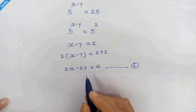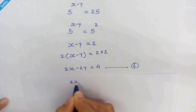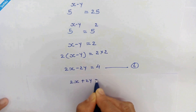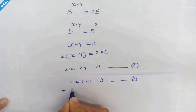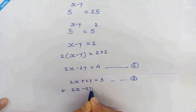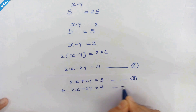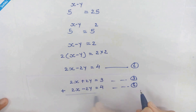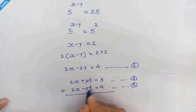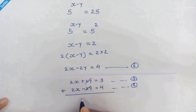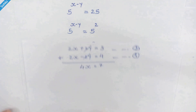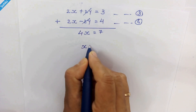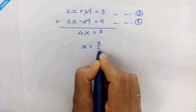Now we will add equation 3 and equation 4. The 2y terms cancel out, and 2x plus 2x is 4x, equal to 3 plus 4, which is 7. So x is equal to 7 upon 4.